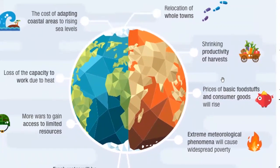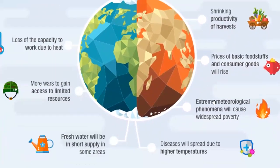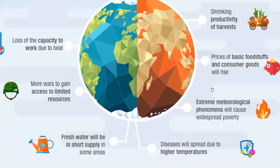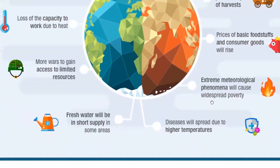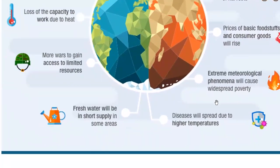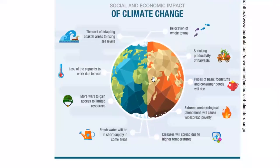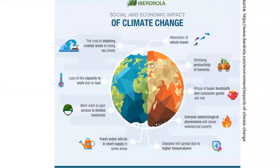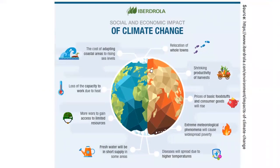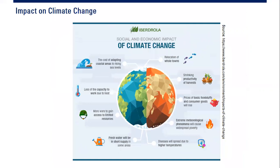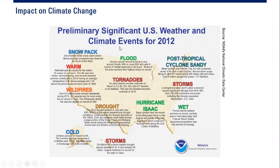Extreme meteorological phenomena will cause widespread poverty. And last but not least — though this list is not exhaustive — diseases will spread due to higher temperatures. Climate change is truly dangerous, and that is why we really need CCUS right now.